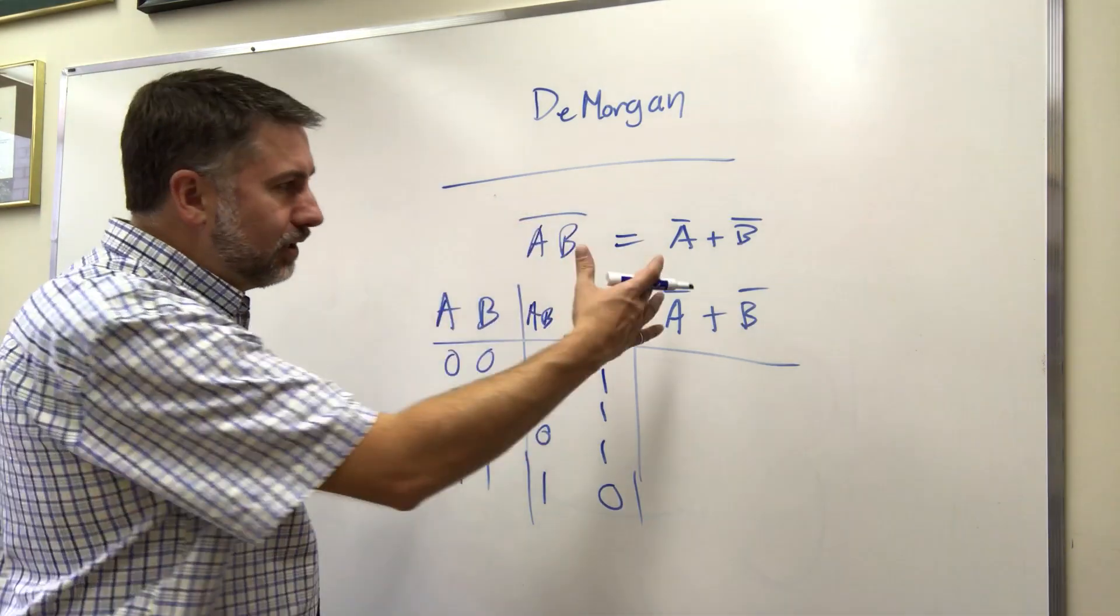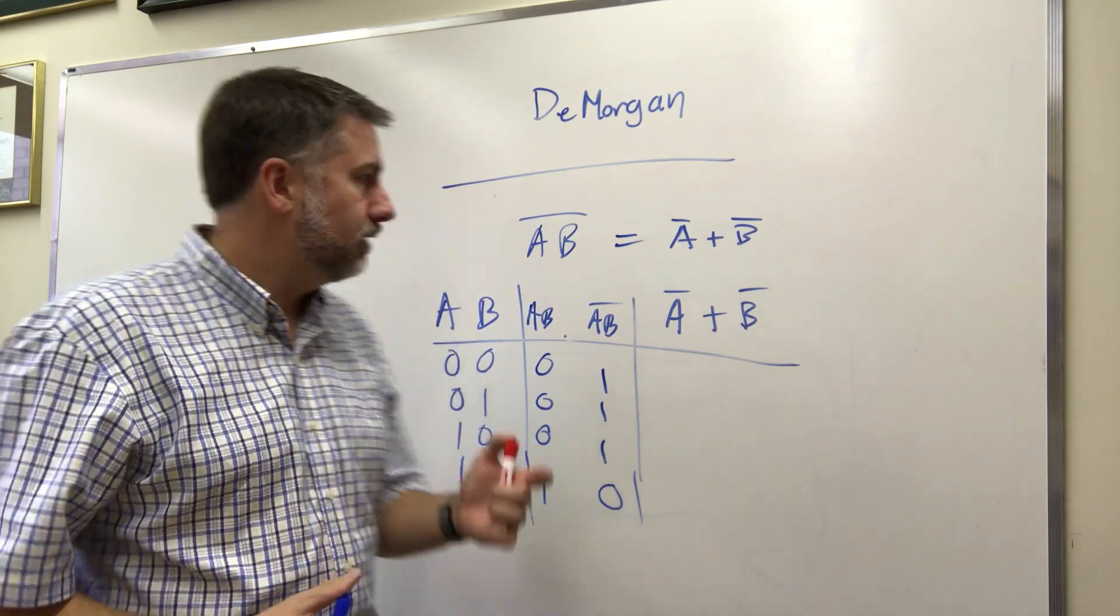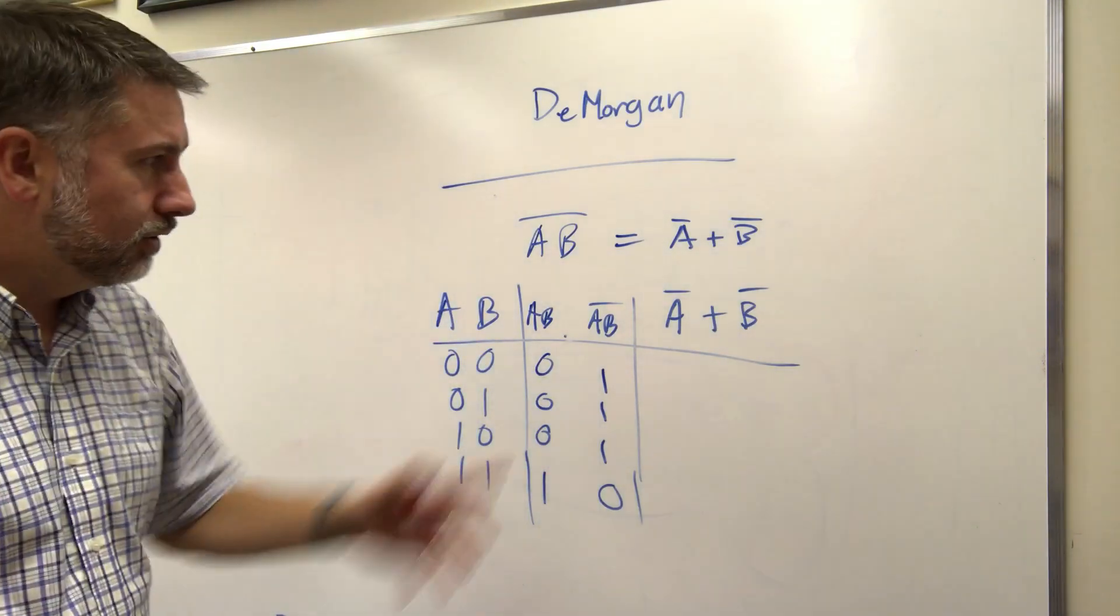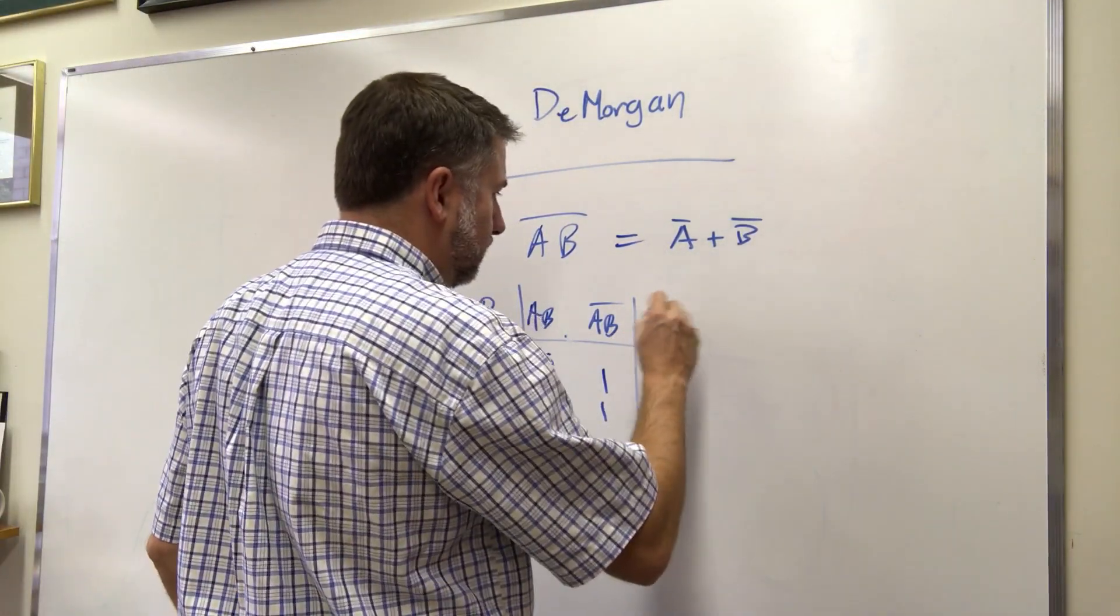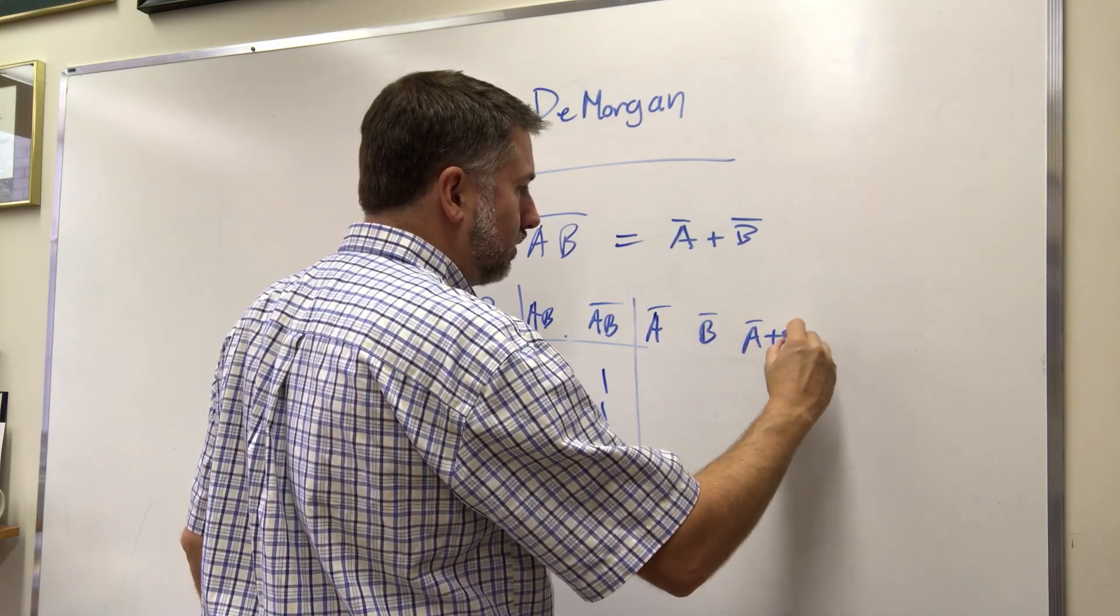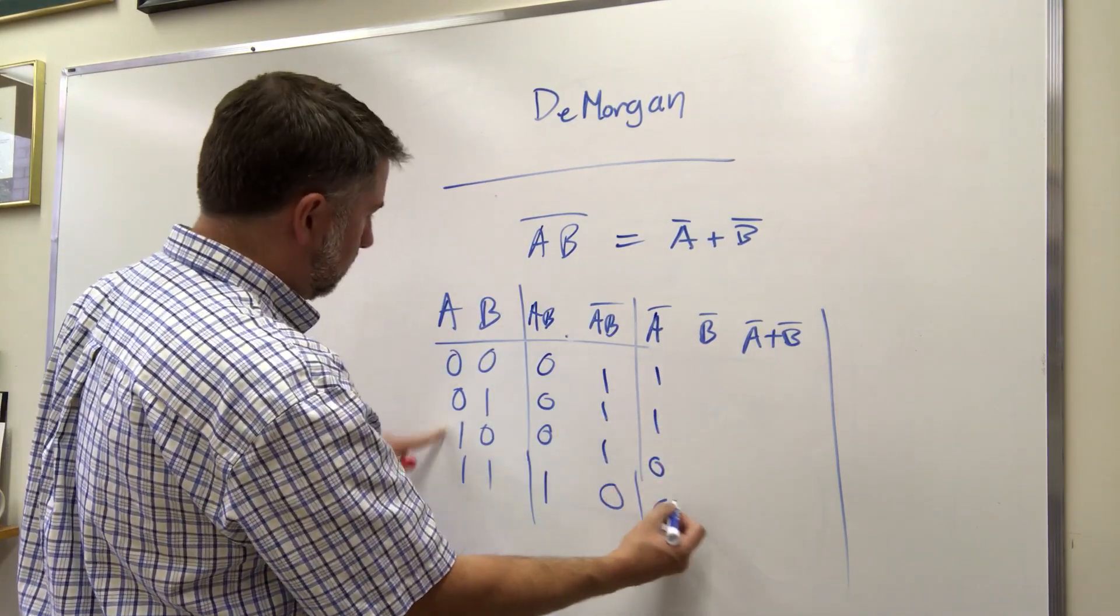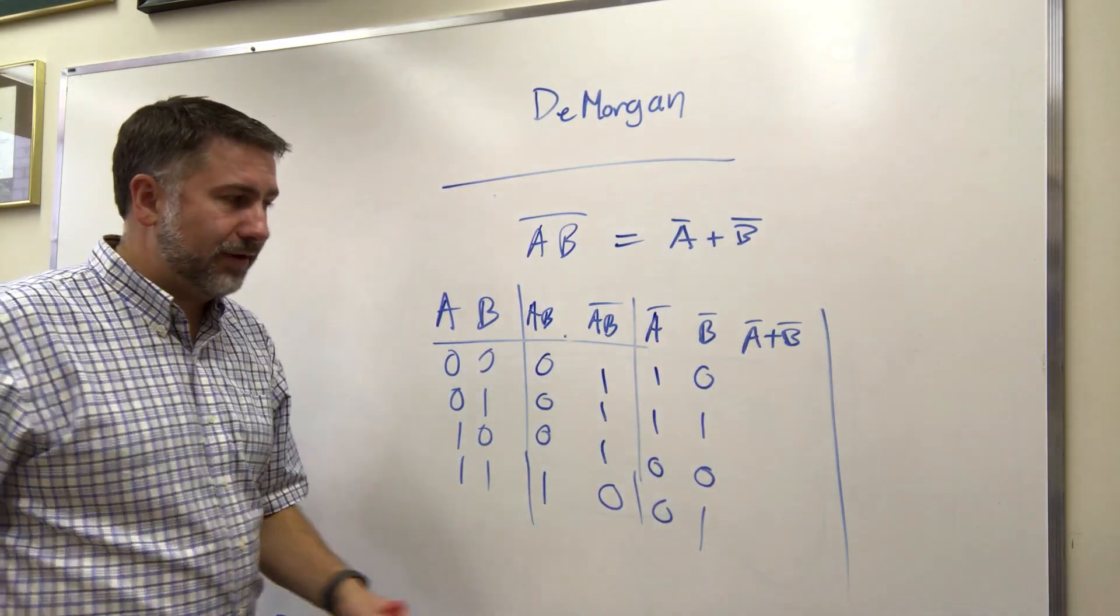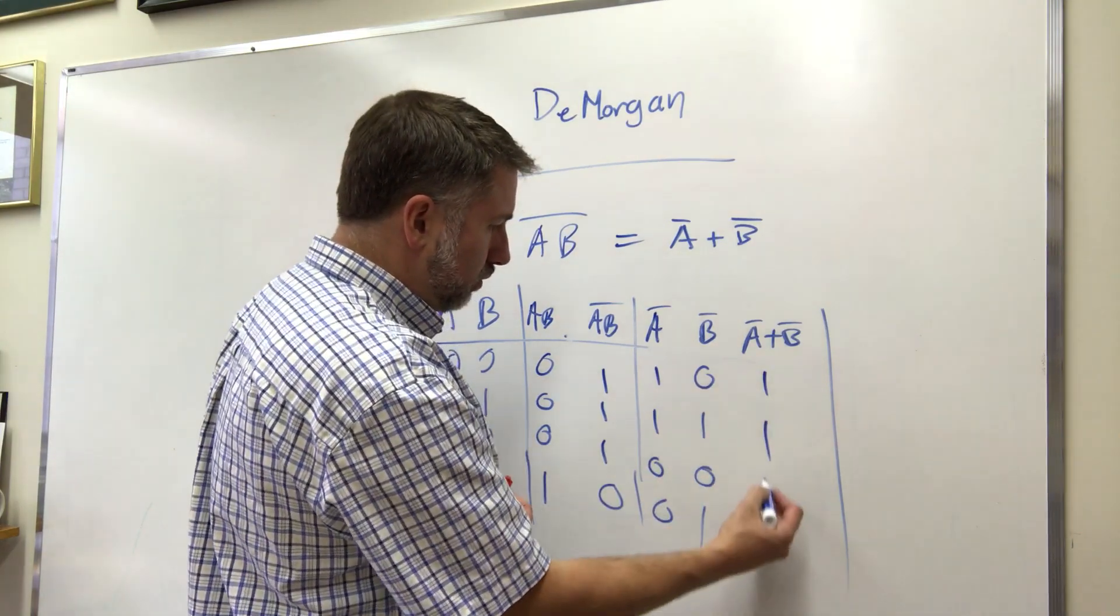So it's true if any of the inputs is false. Now that should be your first hint to maybe relating to OR, because remember OR is true if any of the inputs are true. NAND is true if any of the inputs are false. So let's do this one here. Let's do A NOT, B NOT, and then OR them together. So A NOT we just flip A, B NOT we flip B, and then we OR them together. Now OR is going to be true if any of the inputs are true, so this is true, this is true.